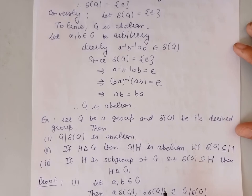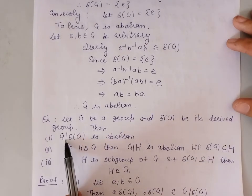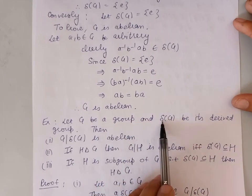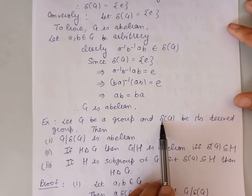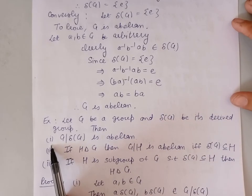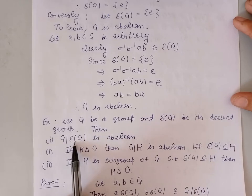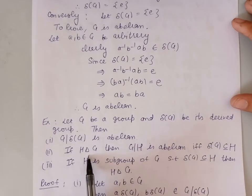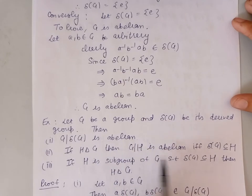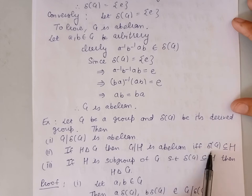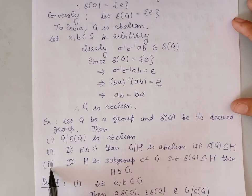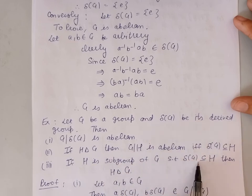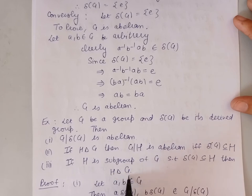Our next theorem concerns the properties of the factor group formed by the commutator subgroup of G. Let G be a group and ΔG its derived subgroup. In the first part, we prove that the factor group G/ΔG is abelian. In the second part, if H is a normal subgroup of G, then the quotient group G/H is abelian if and only if ΔG is contained in H. In the third part, if H is a subgroup of G such that ΔG is contained in H, then H is a normal subgroup of G.